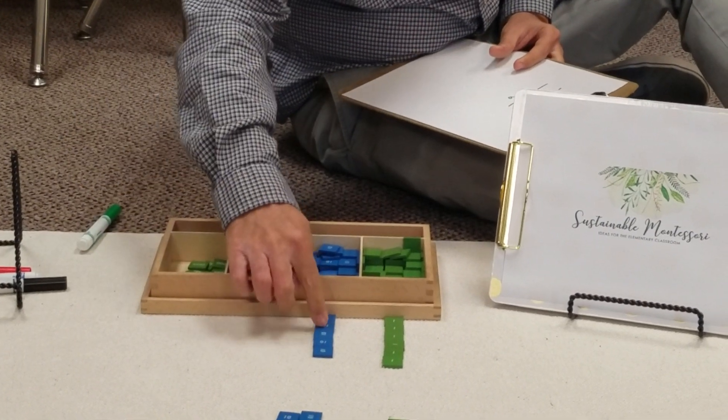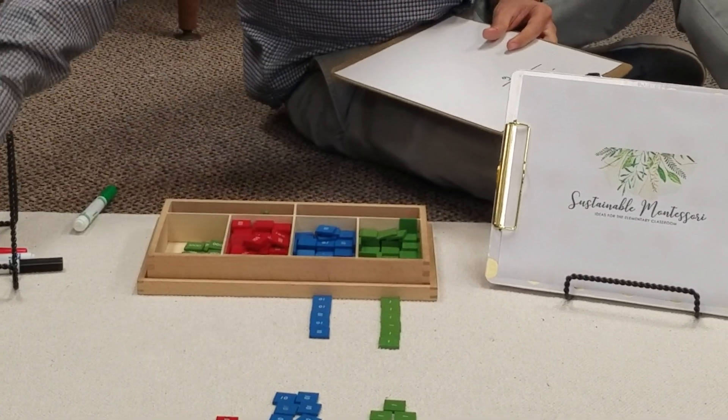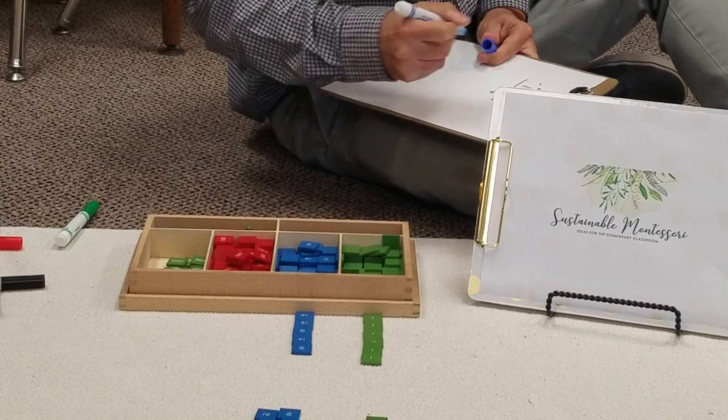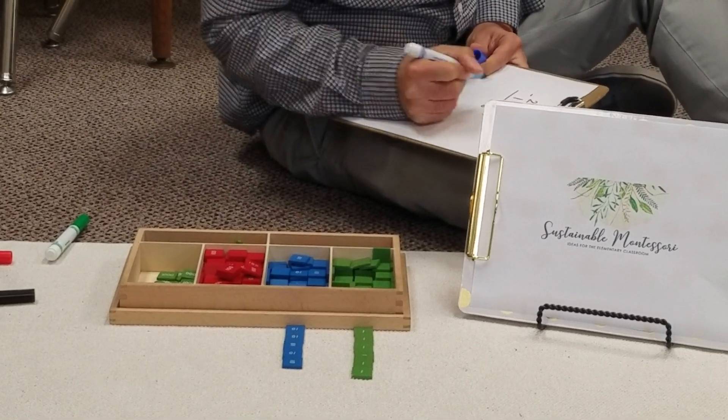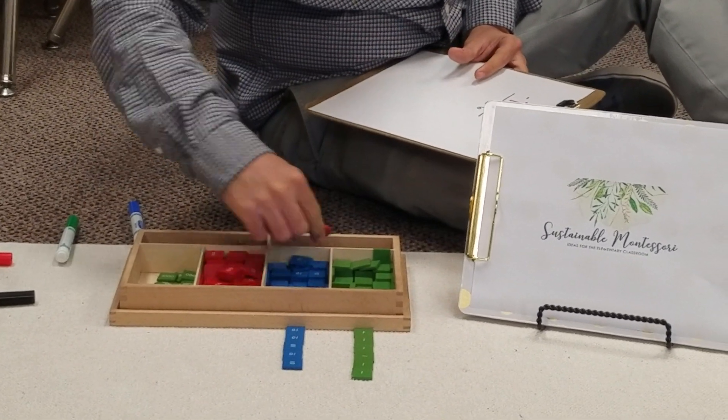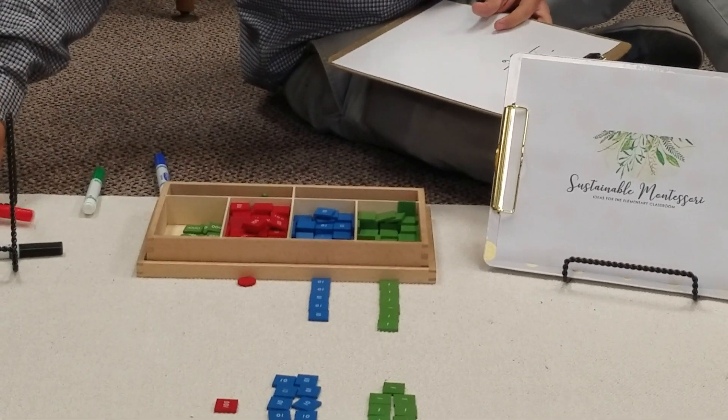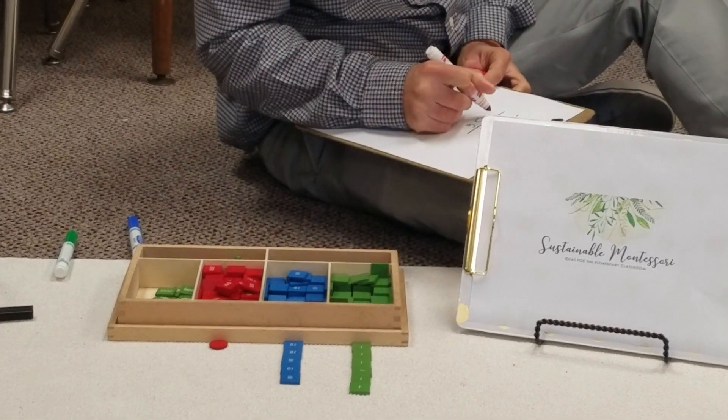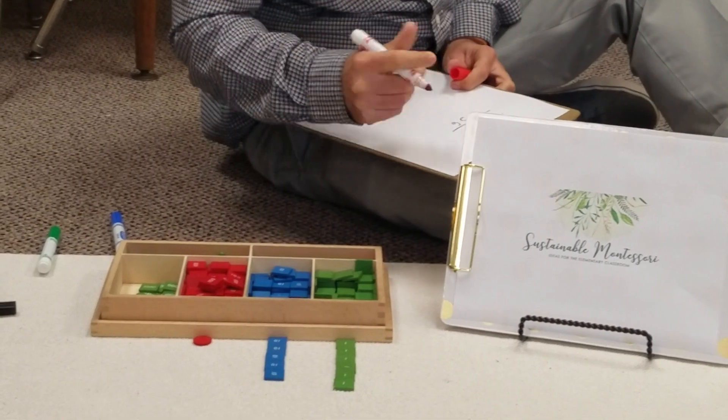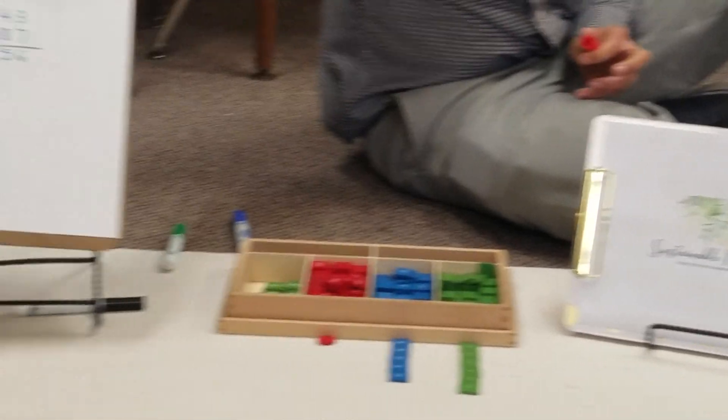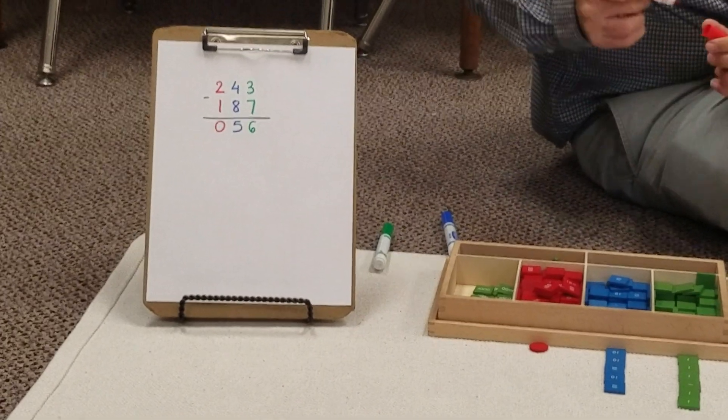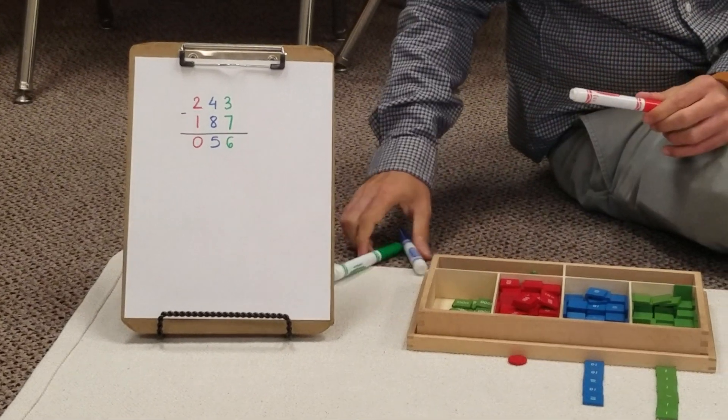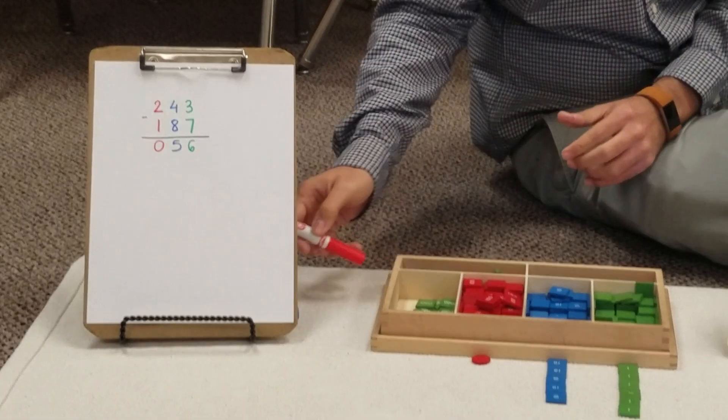And then we have 1, 2, 3, 4, 5 tens, and we have 0 hundreds. So if we have 243 and we take away 187, our answer would be 56.